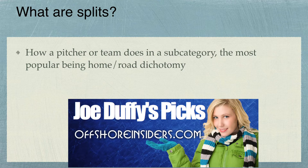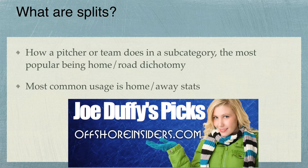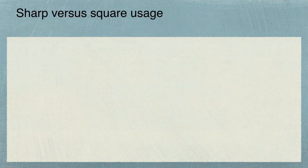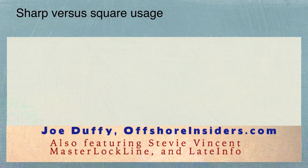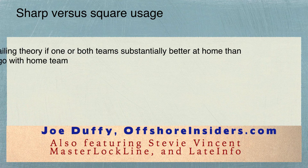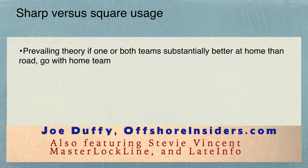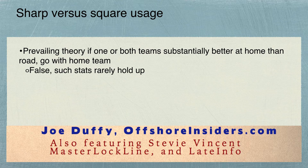The most popular, though, is the home-road dichotomy — how a team does on the road as opposed to how they do at home. Now, sharp versus square usage: the prevailing theory is if one team or both teams are substantially better at home than on the road, go with the home team under those circumstances.